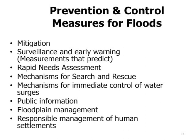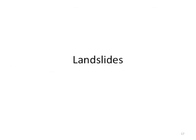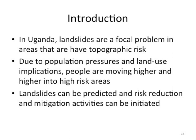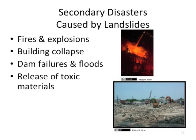Landslides. In Uganda, as an example, landslides are a focal problem in areas that have topographic risk. Due to population pressures and land use implications, people are moving higher and higher into high-risk areas. Landslides can be predicted and risk reduction and mitigation activities can be initiated. Secondary disasters caused by landslides include fires and explosions, building collapse, dam failures and floods, and release of toxic materials.